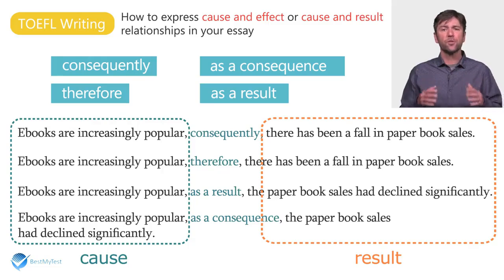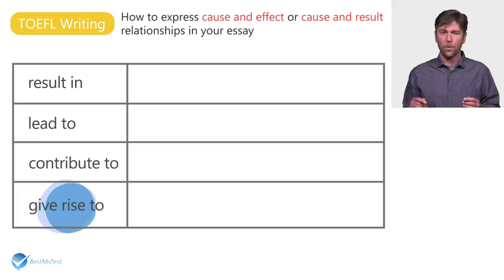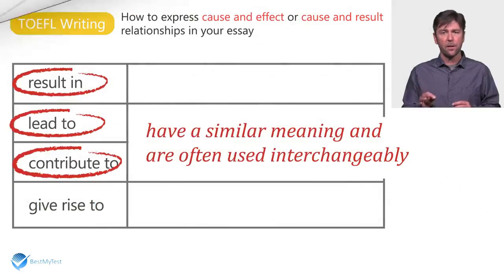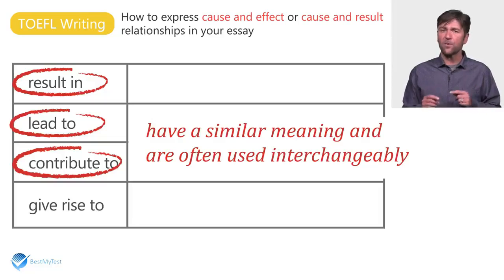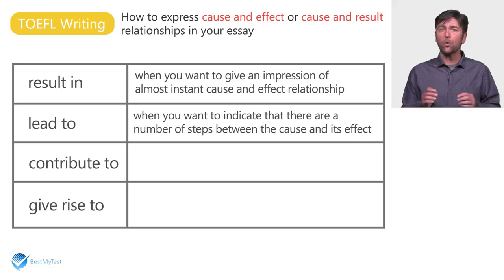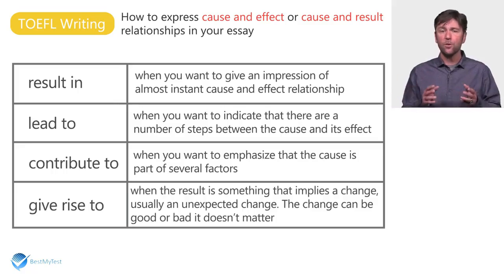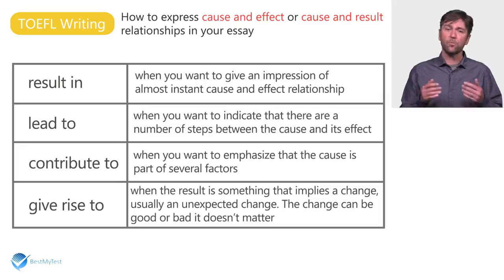You can also use phrases to introduce results or effects in the middle of sentences: result in, lead to, contribute to, give rise to. Result in, lead to, and contribute to have a similar meaning and are often used interchangeably. However, there is a subtle difference: use result in for an almost instant cause and effect relationship; use lead to when there are a number of steps between cause and effect; use contribute to when the cause is part of several factors; and use give rise to when the result implies a change — usually unexpected — which can be good or bad.